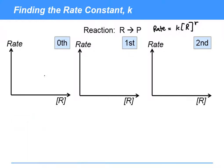Okay, here goes. In the case of a zeroth order reaction we've essentially got rate equals K times R to the zero, which is just one.